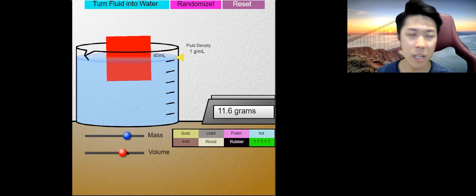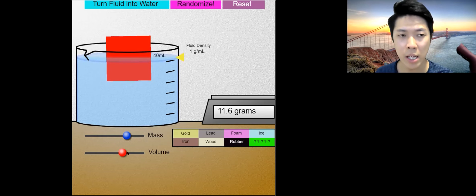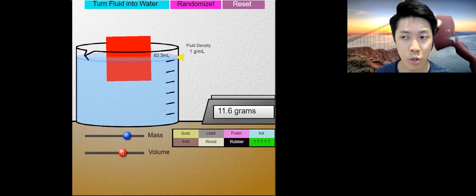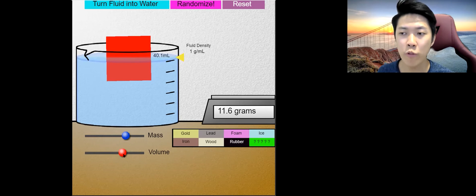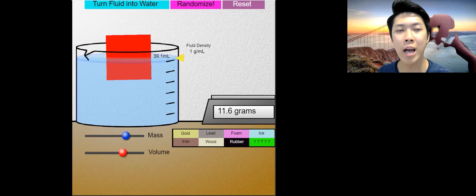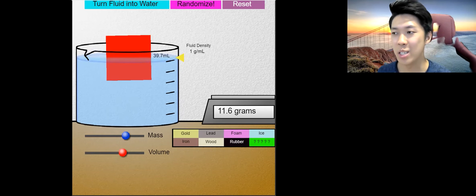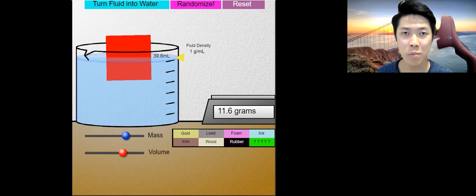So what I'm trying to prove to you is we have two factors that are involving in density. One of it will be mass and the other one will be volume. So it's not always like it's heavy so it's going to sink or it's light so it's going to float. Not necessarily the case because we have something called volume here to also take in consideration. Both of this does affect the answer of your density.